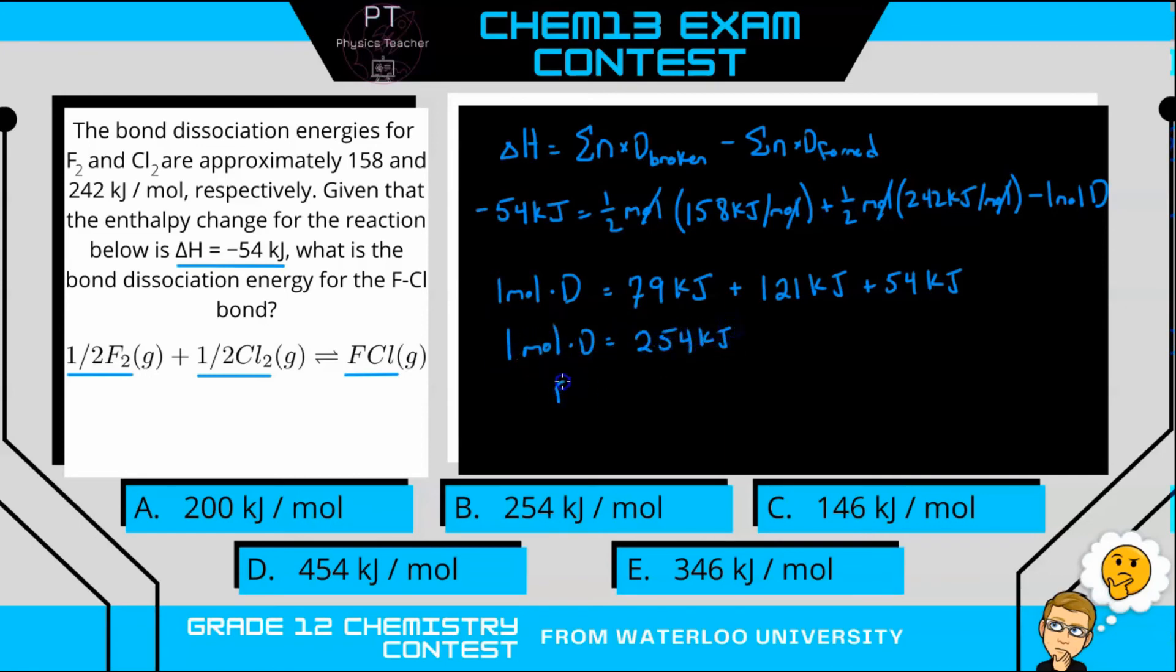Or if we divide by the mole, we get D equals 254 kJ per mole. So the dissociation energy for the FCl bond is B, 254 kJ per mole.